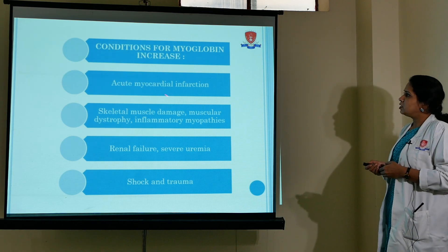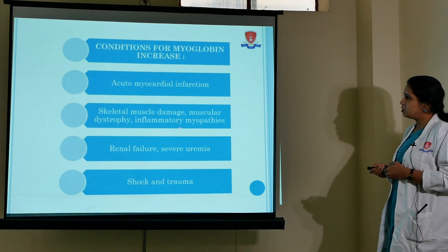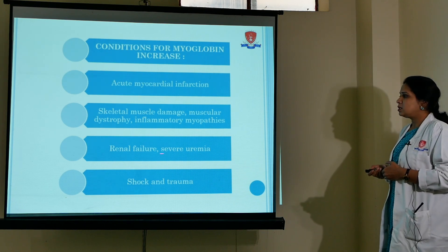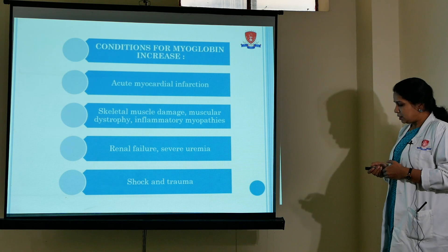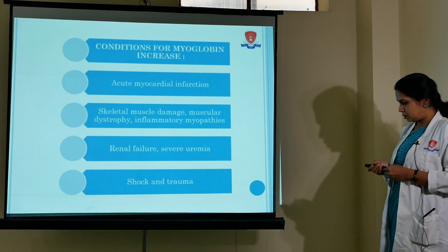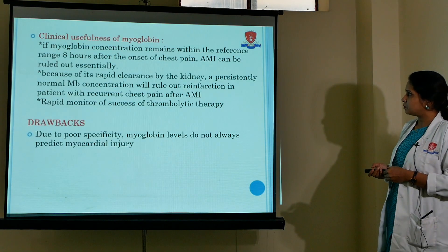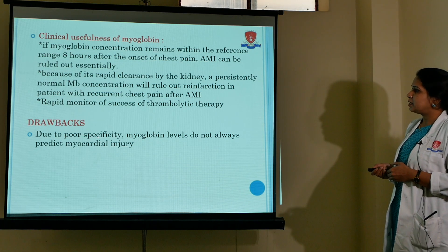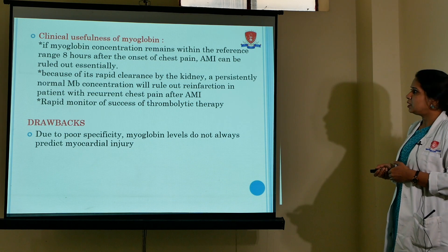Conditions in which myoglobin can increase include acute myocardial infarction, skeletal muscle damage, muscular dystrophy, renal failure, severe uremia, shock, and trauma. This means myoglobin is not specific to myocardial infarction — it is non-specific. Its main drawback is poor specificity, meaning it does not always predict only myocardial injury.